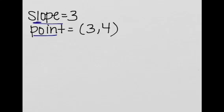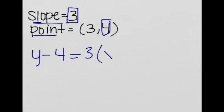So all we do is y minus y1, which is 4, equals the slope, which is 3, times x minus x1, which is 3.